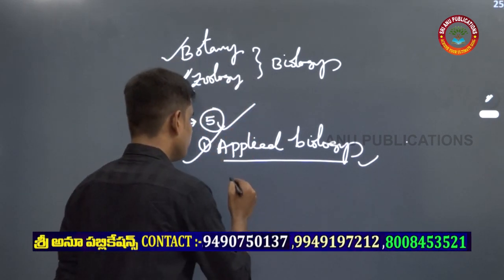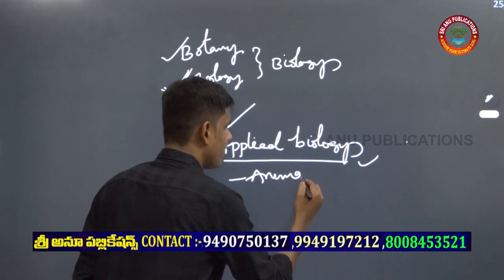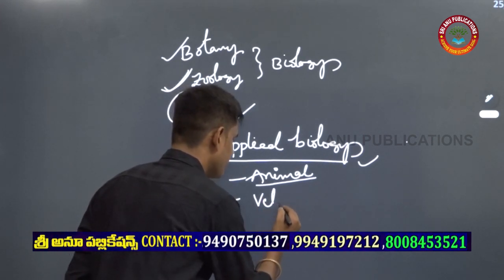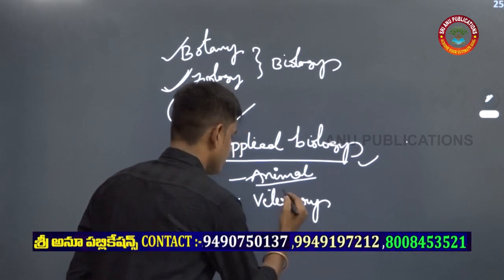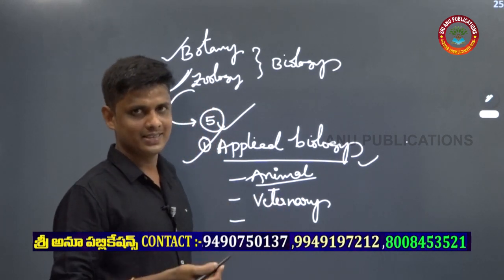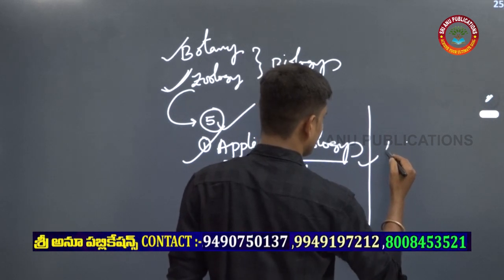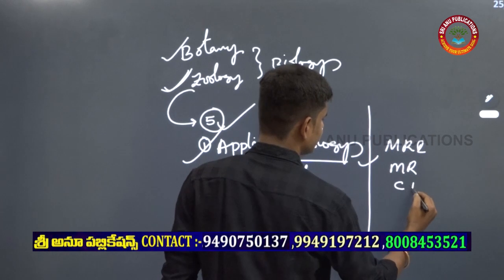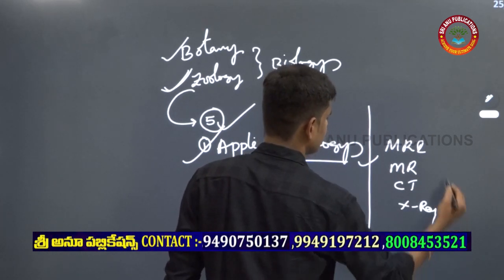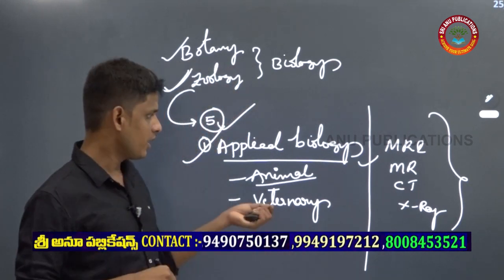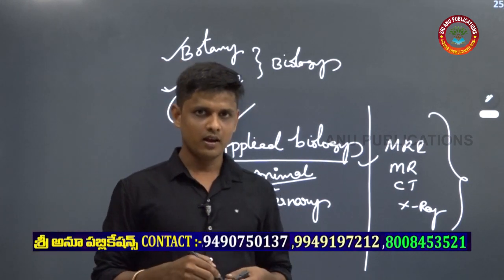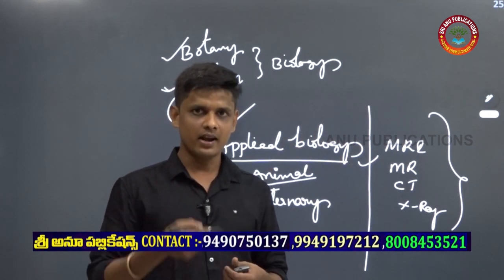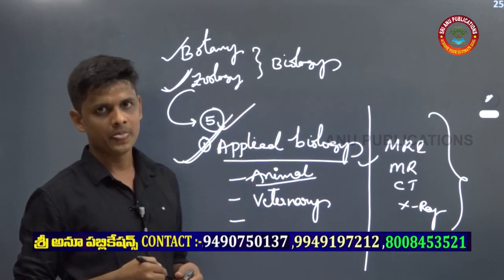For example, from Applied Biology there is animal husbandry and veterinary sciences. Also, when it comes to human techniques — if you go to a hospital you can see MRI scans, CT scans, X-rays — these are all methods involved in human biology. These are applications used in medication and diagnostics, and such topics are covered under Applied Biology.